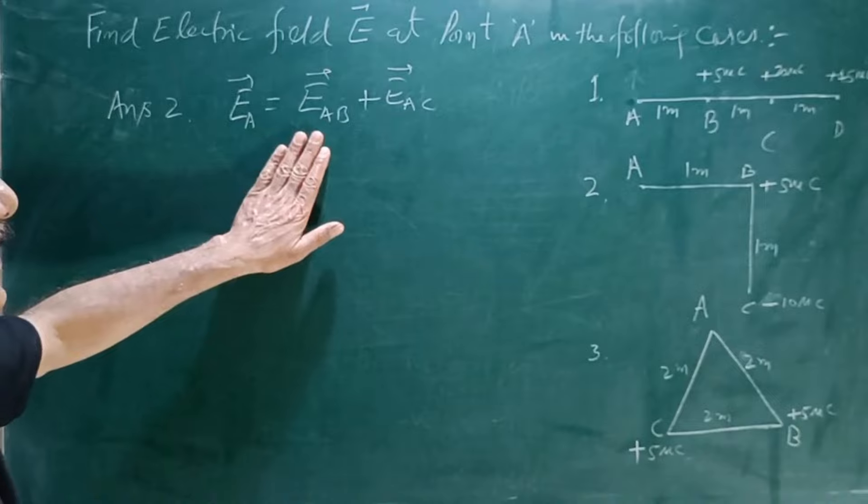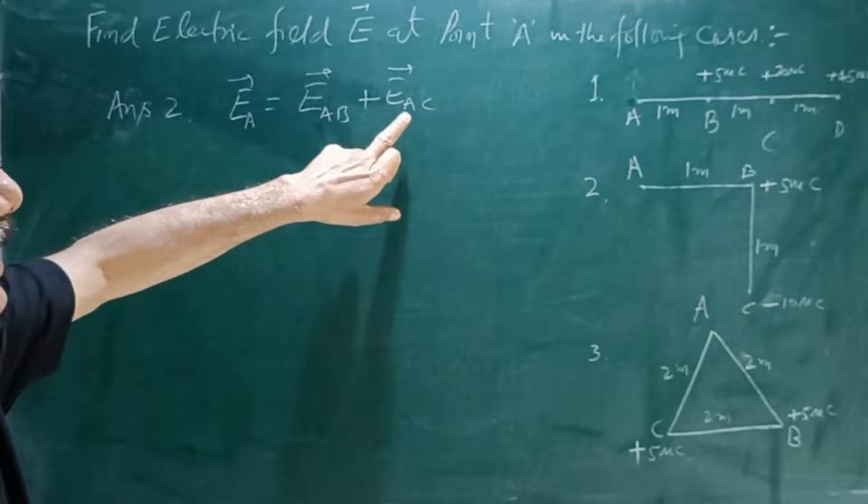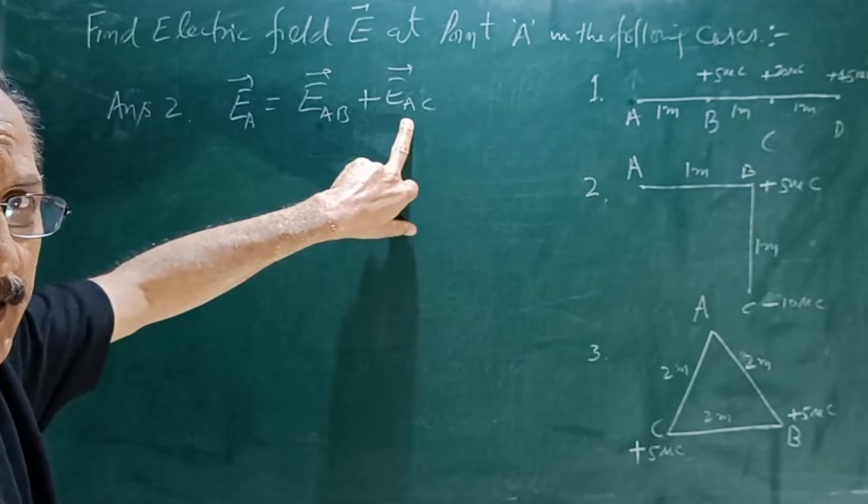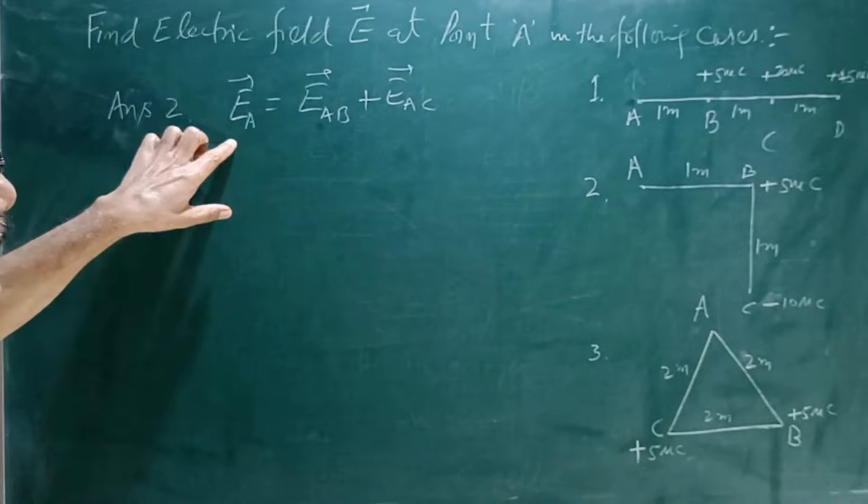Unless you find out the direction of this electric field EAB and this electric field EAC, we cannot find the magnitude of the electric field at A.